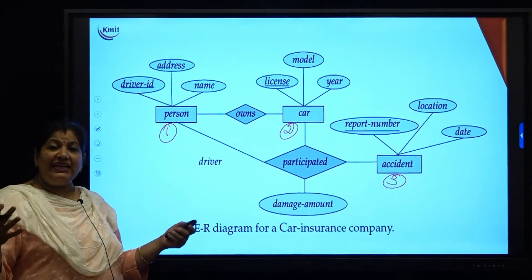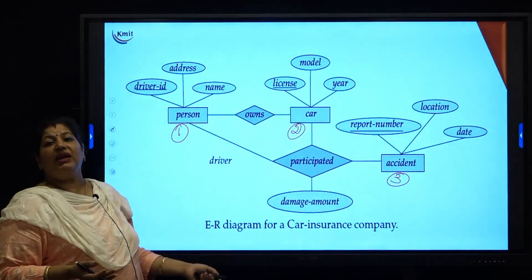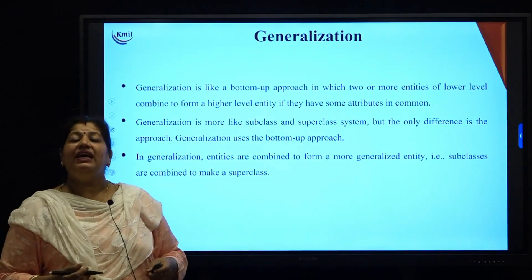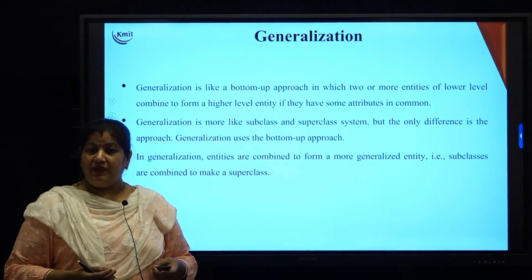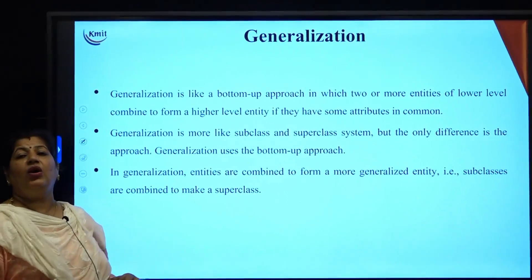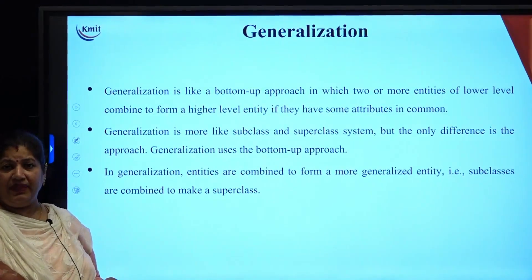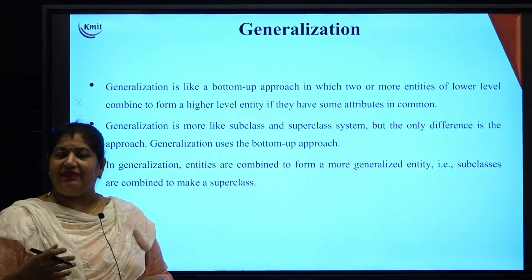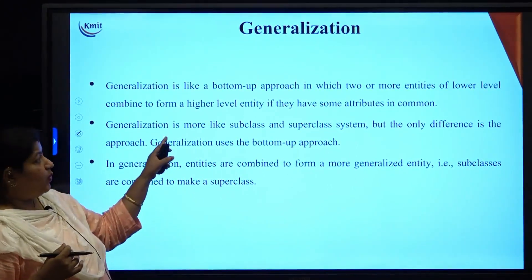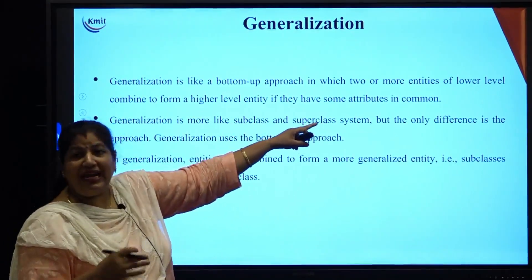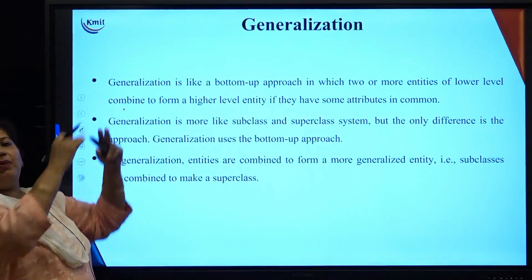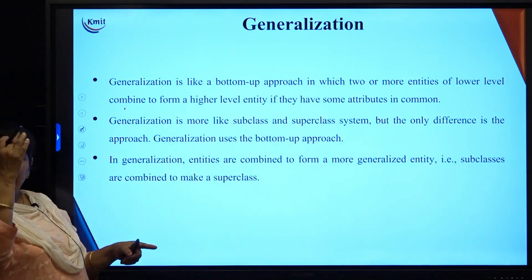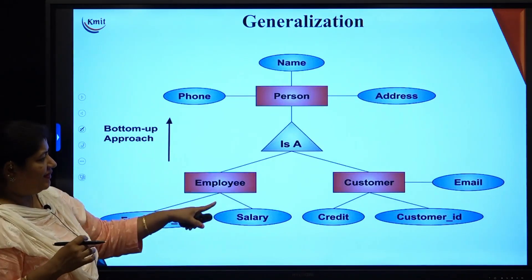As the number of entities and relationships increases, the diagram becomes more and more complex. Coming to advanced features — some additional types of relationships. Generalization is a concept similar to inheritance with superclass and subclass, but this is a bottom-up approach: two or more entities at the lower level are combined to form a higher-level entity.